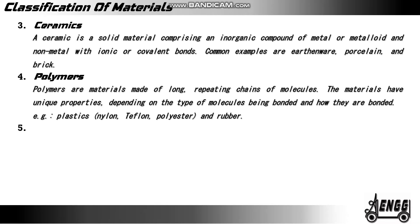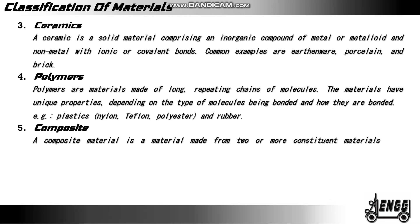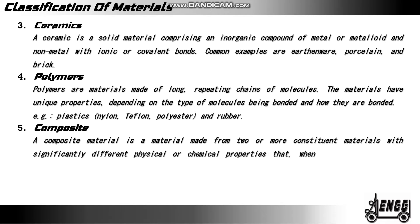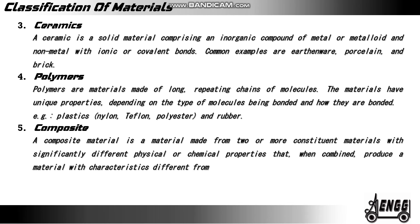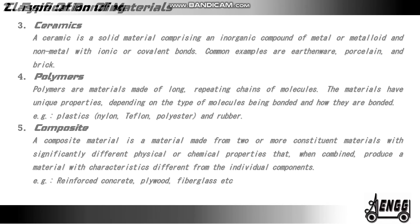Composite. A composite material is made from two or more constituent materials with significantly different physical or chemical properties that when combined produce a material with characteristics different from the individual components. Examples include reinforced concrete, plywood and fiberglass.